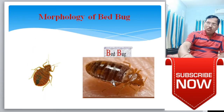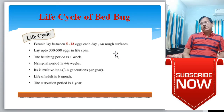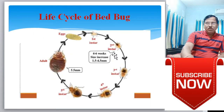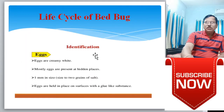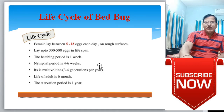This is a schematic representation of the intact bed bug. The next topic in the syllabus is the life cycle of the bed bug. The life cycle of bed bugs is completed in three stages: eggs, nymph, and adult. This type of metamorphosis is called incomplete metamorphosis. In the life cycle, the female lays between 5 to 12 eggs each day on rough surfaces, laying up to 300 eggs in a single lifespan.